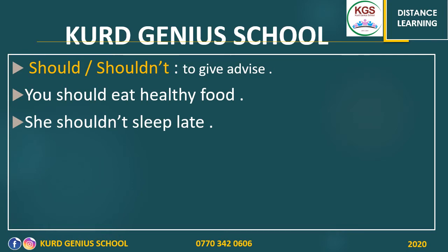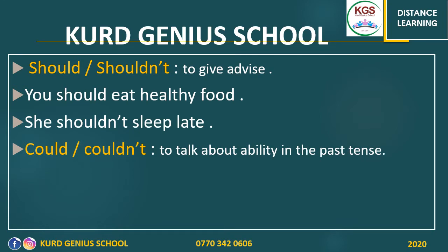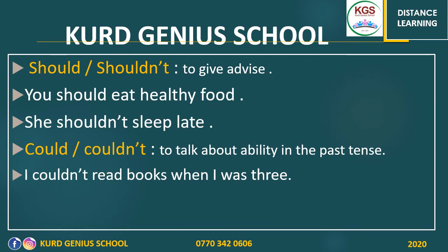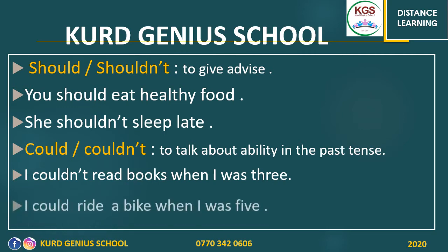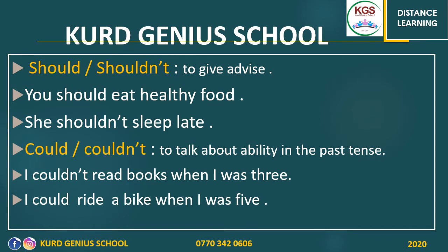We also talked about 'could' and 'couldn't', which we use when talking about ability in the past. For example: 'I couldn't read books when I was three' — that was my ability at age three. But now I can read easily. Or: 'I could ride a bike when I was five, but now I can't.'